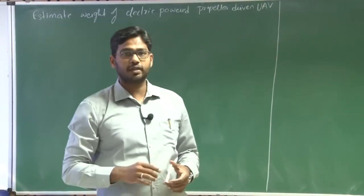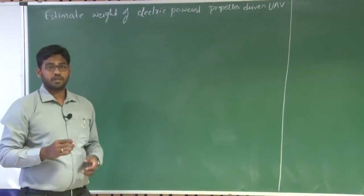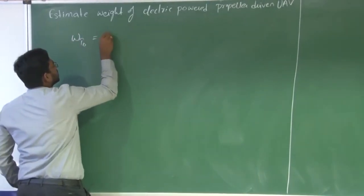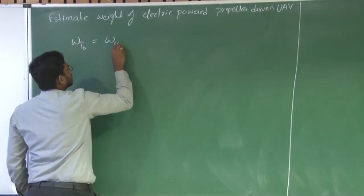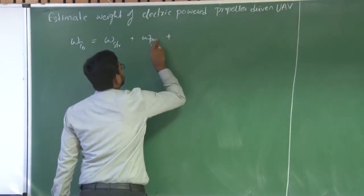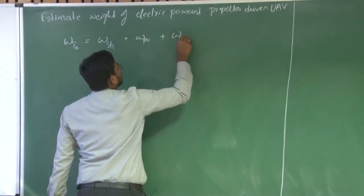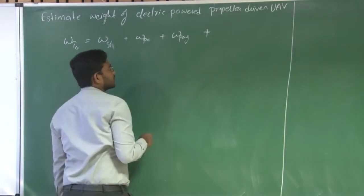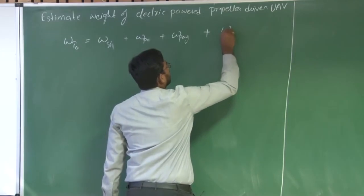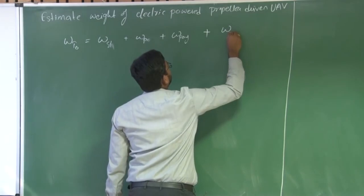Dear friends, welcome back. In our previous lecture, we discussed about weight estimation of an electric powered propeller driven UAV, where the total takeoff weight is a summation of structural weight, propulsion weight, weight of the propulsion system, weight of the structural system. And of course, there is a payload which is guided by the mission requirements. And then what you have is fuel weight or battery weight.